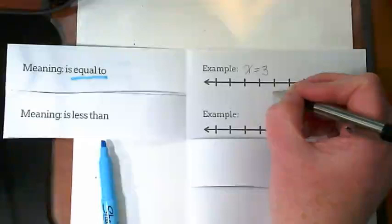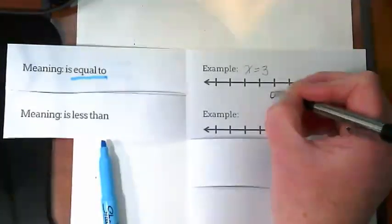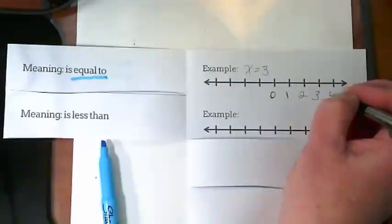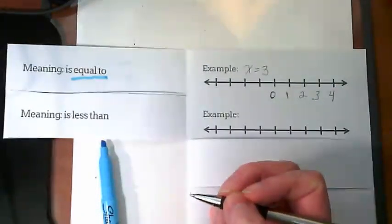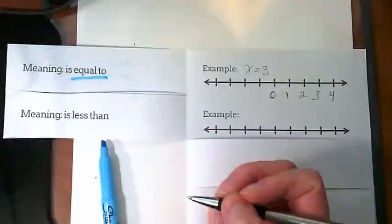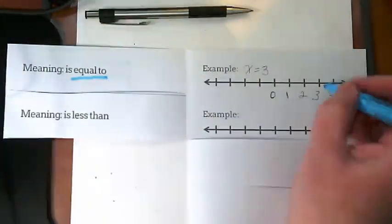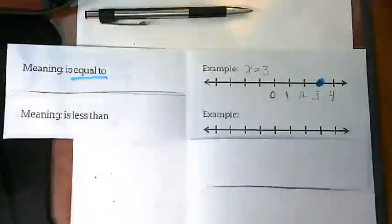An example of this could be x is equal to 3. We're going to do a real quick graph here. Whenever we're graphing these, we don't have to make a giant graph. We just want to make sure that the number that we're graphing is on the graph. If it is equal to 3, that means I'm going to fill in the dot just for the 3.